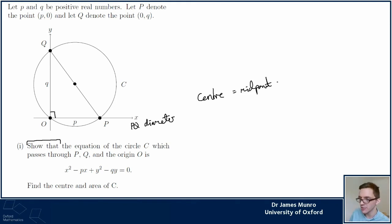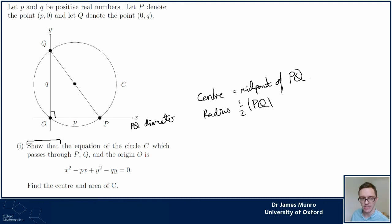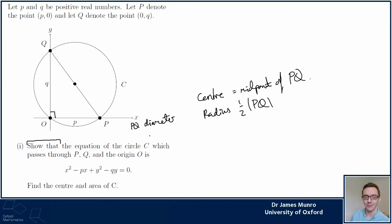The midpoint of PQ gives the center, and the radius is half the length of PQ. I know the coordinates of P and Q so I can relax - we've had our geometric insight. For a 'show that' question we should write down: this is the angle in a semicircle, so PQ is the diameter, so the midpoint is the center of the circle.